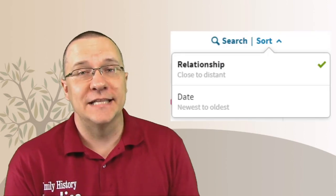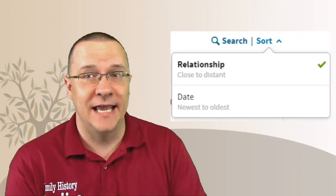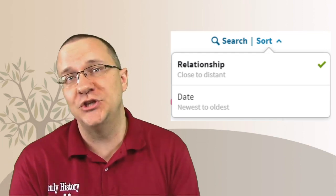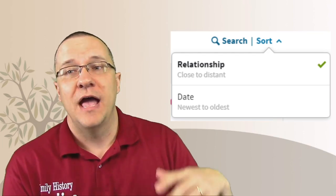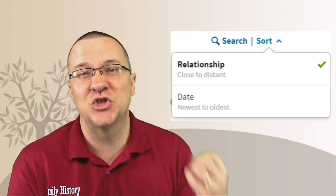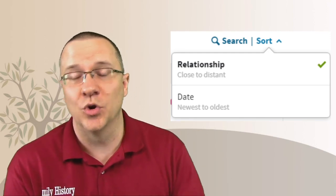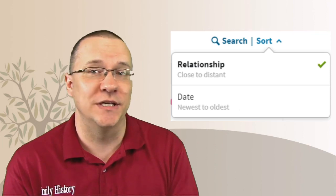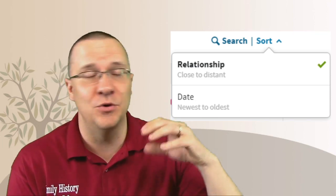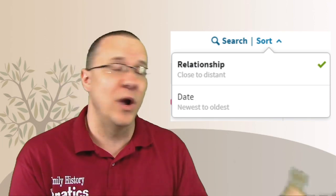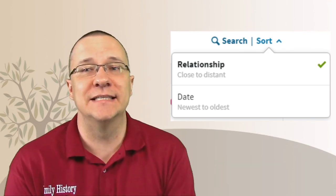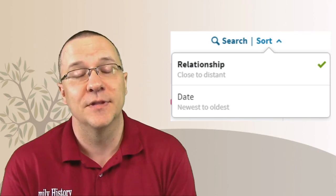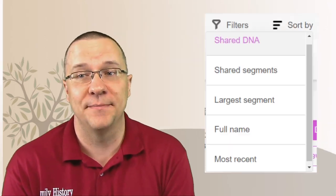Over on Ancestry, there is a sort button and they have two ways that you can sort. Now naturally, it is sorted by relationship. And the other way is you can sort it by date. In other words, which matches are the newest. This is really helpful if you've gone through a lot of your matches and then you go away for a time, come back, log on to the site and you want to see who has joined the site since the last time I was on here. So they have a good function for that.